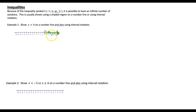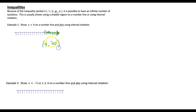Using interval notation, once it's shaded on a number line, the interval notation is very similar. At 4, we're going to have that parentheses. And then showing that it keeps going to the right and never stops, we would say infinity. Infinity is always in a parentheses because you can't pinpoint exactly where it stops. So we would have x is greater than 4 on a number line, and also in interval notation.